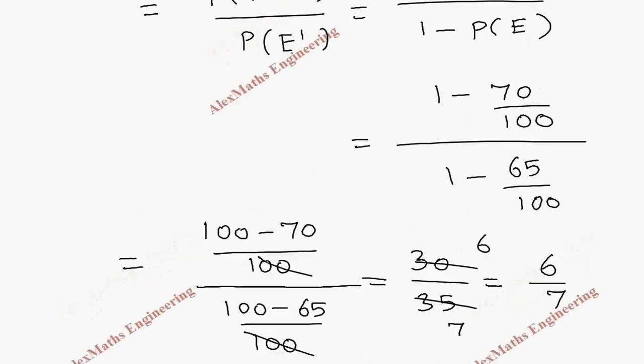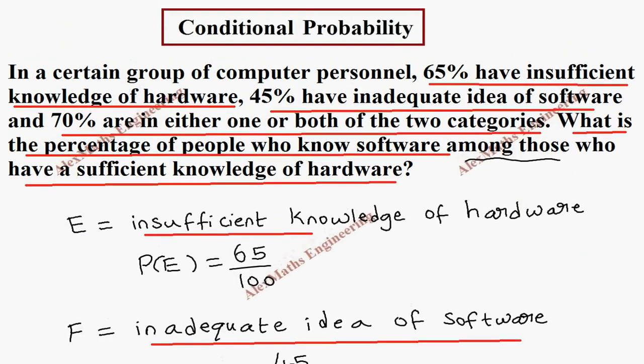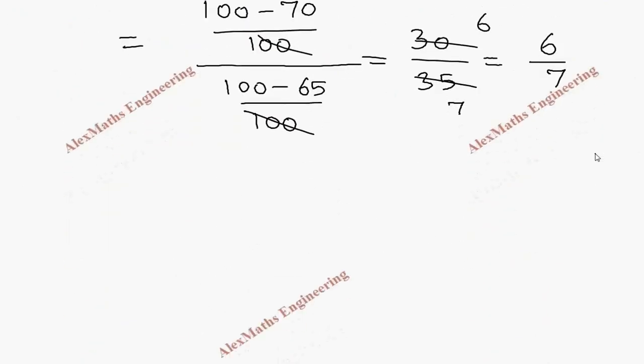What we got is the probability, but they are asking for the percentage of the people. So percentage of people is 6 by 7 into 100. After simplification, it comes to 85.71 percentage.